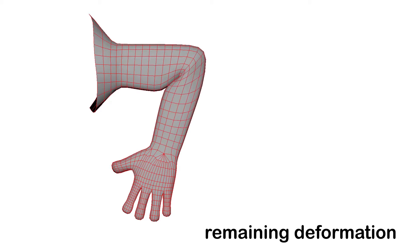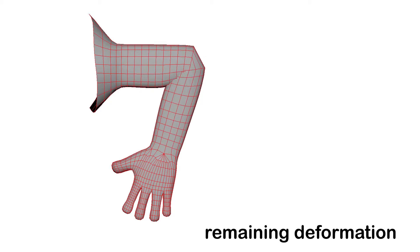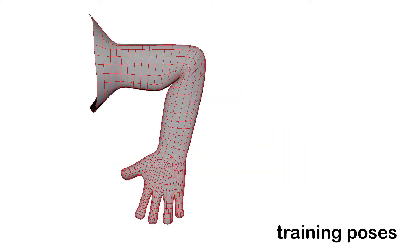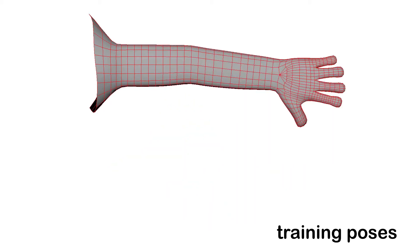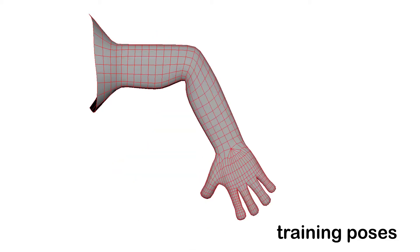The remaining deformation shown here is approximated using deep learning methods. To train the approximator, we generate a large set of example poses covering the full range of motion of the character.